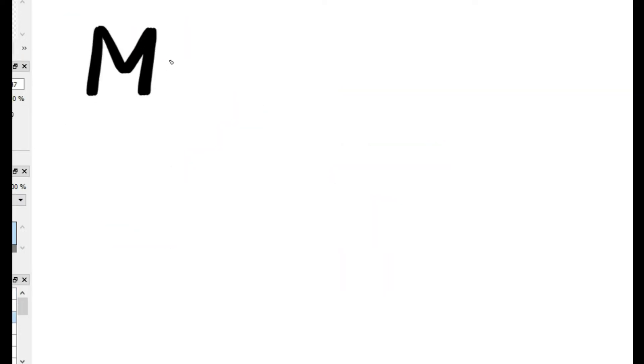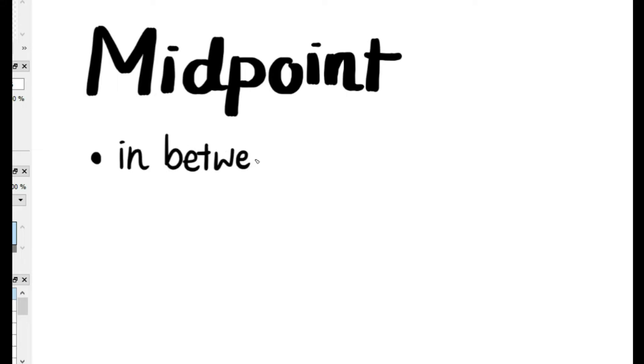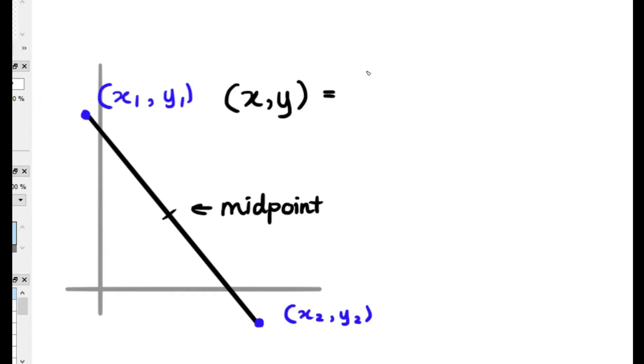Now for the midpoint, which is related to a straight line in some way, it's in between two points on a straight line. There is the midpoint right there, which is in between two points, and the formula is x1 plus x2 over 2, and for the other coordinate is y1 plus y2 over 2.